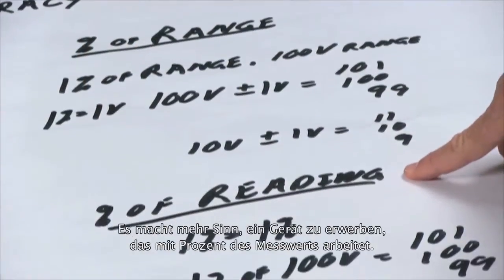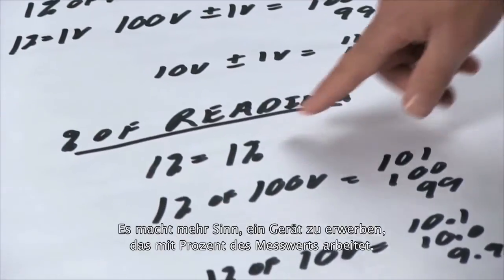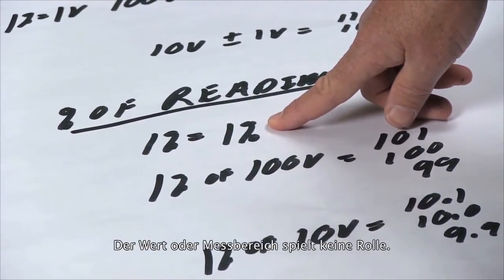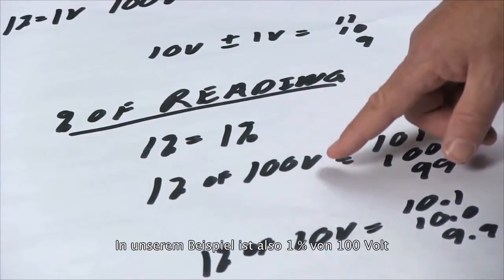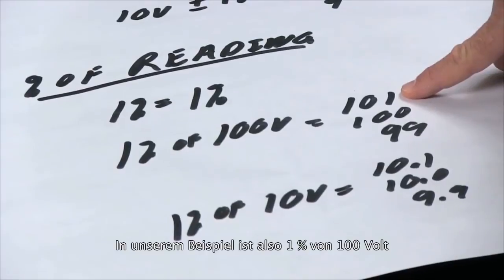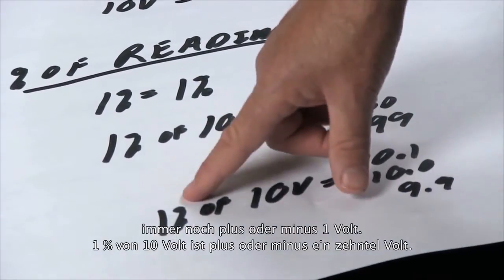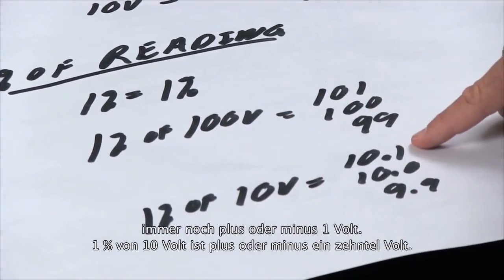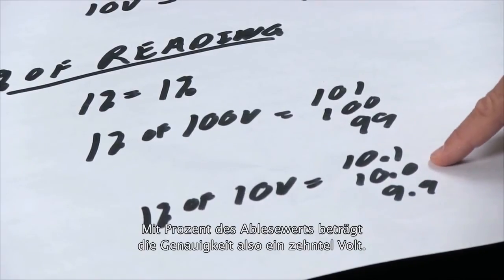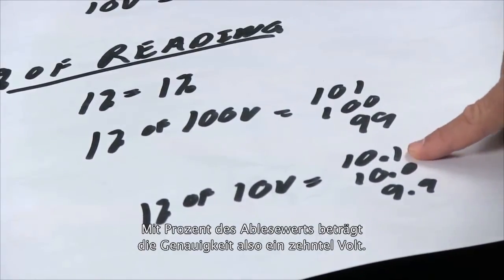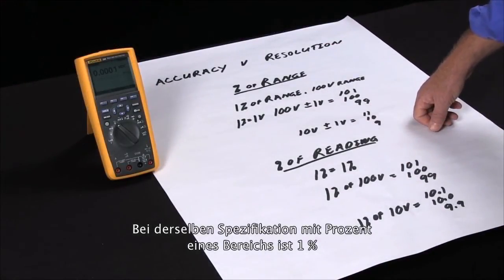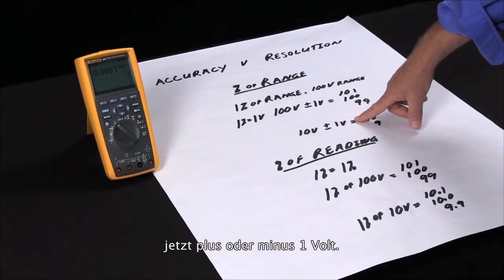A better way is to buy an instrument that has percent of reading — then one percent is one percent, regardless of what value or range you're on. One percent of a hundred volts is plus or minus one volt. One percent of ten volts is plus or minus a tenth of a volt. So with percent of range the accuracy at ten volts is a tenth of a volt, whereas the same specification with percent of range gives plus or minus one volt.